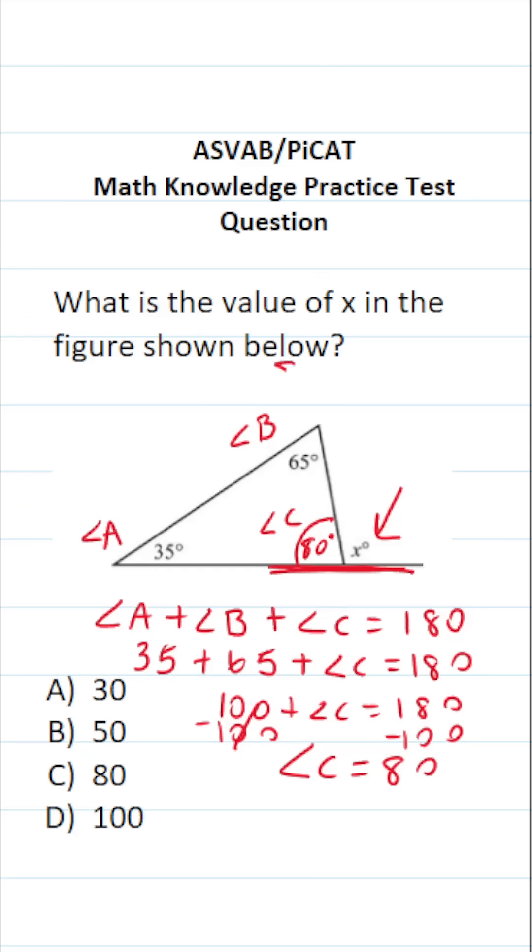So in other words, 80 degrees plus x degrees, that is this angle plus this angle, is going to equal 180 degrees. All right, so to solve for x, all we have to do is subtract 80 from both sides. In doing so...